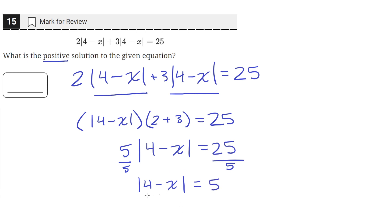Now that we've gotten to this step, we can use the absolute value property to notice that this is the same as two equations. The first one is 4 minus x equals 5, and the second one is that 4 minus x equals negative 5.